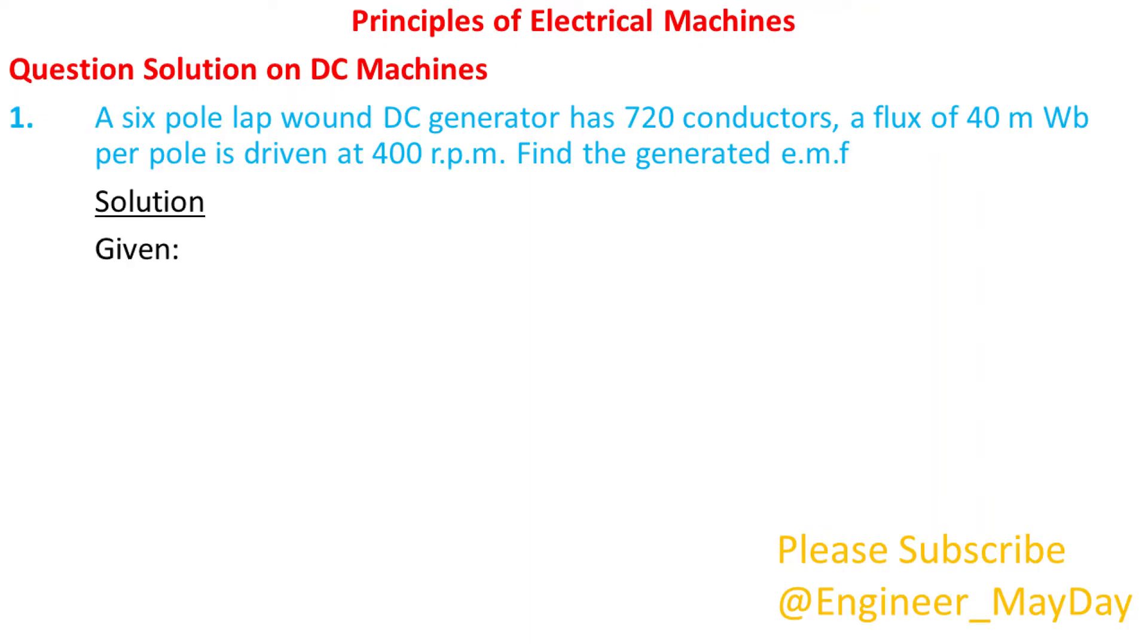Solution. Given: P equals 6, Z equals 720, phi equals 40 times 10 power minus 3 weber, N equals 400 RPM.